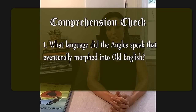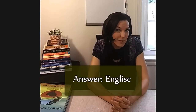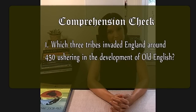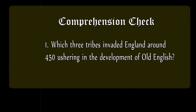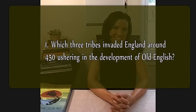So it's time for a comprehension check. Which language did the Angles speak that eventually morphed into Old English? Great work — it's Ingliske. And one more question: which three Germanic tribes invaded England around 450, ushering in the development of Old English? Nicely done — the Angles, the Saxons, and the Jutes.